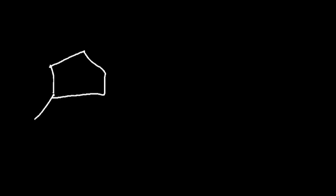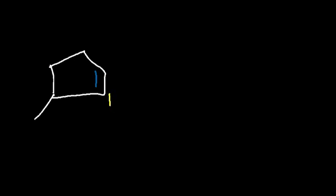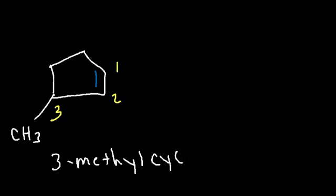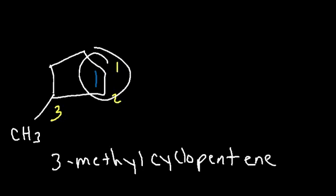Knowing that, what is the name of this particular molecule? Feel free to pause the video as you work out this example. If we count one way, the methyl will be on carbon 5. However, if we count the other way, the methyl will be on carbon 3. So let's count that way. This is going to be 3-methylcyclopentene, since it's a 5-carbon ring. We don't have to say 3-methyl-1-cyclopentene, because the double bond is assumed to be on carbon 1.